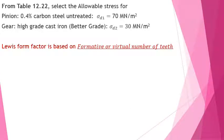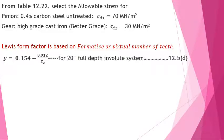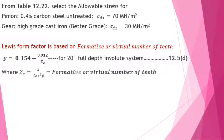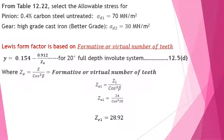Next, finding the Lewis form factor. In helical gears it is based on the formative or virtual number of teeth. The Lewis form factor Y is given by equation 12.5D for the 20 degree full depth involute system: Y = 0.154 − 0.912/Z. In place of Z, substitute Ze, the virtual number of teeth, where Ze = Z / cos³(beta). For Ze1: 24 / cos³(20°) = 28.92.